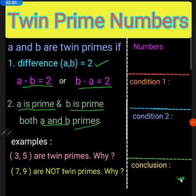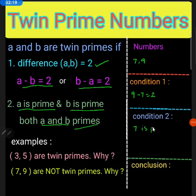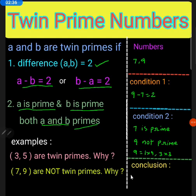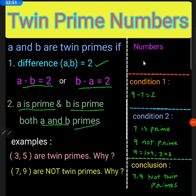Now consider another example: seven and nine. The first condition is nine minus seven equals two. The second condition: seven is a prime number, but nine is not a prime number, because nine equals one times nine and also three times three. Therefore, the conclusion is seven and nine are not twin primes.